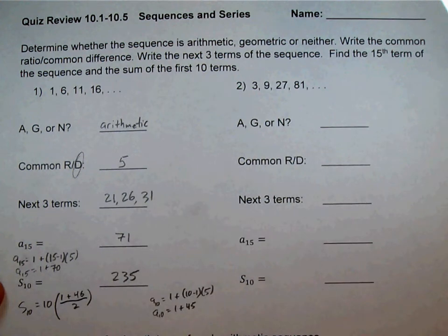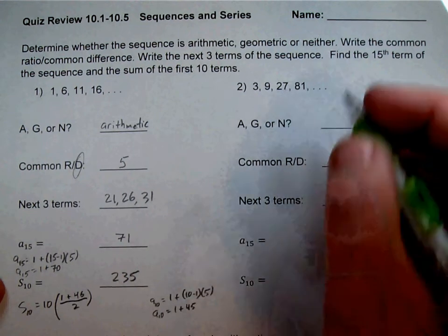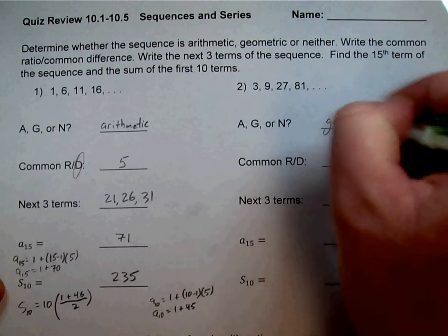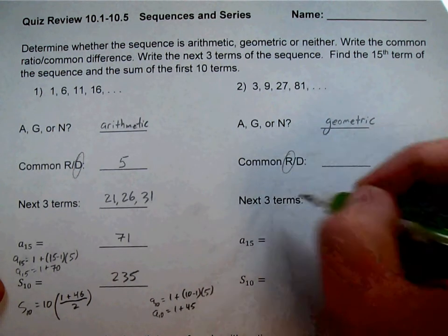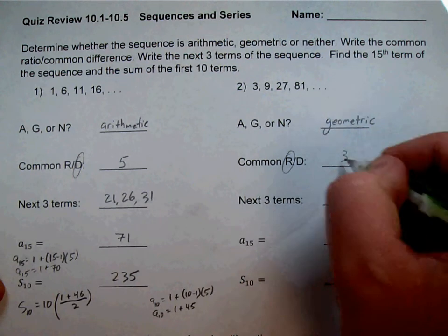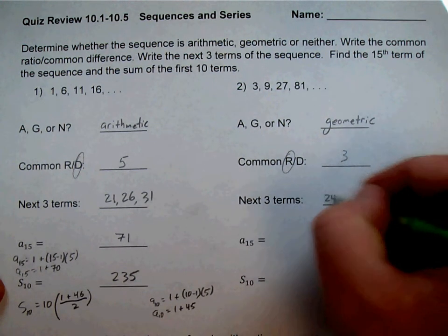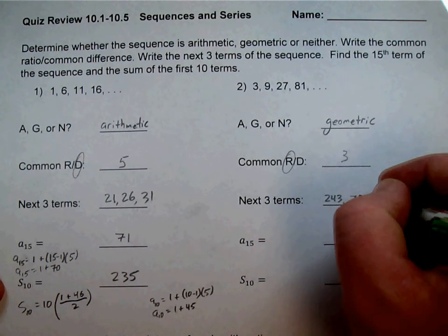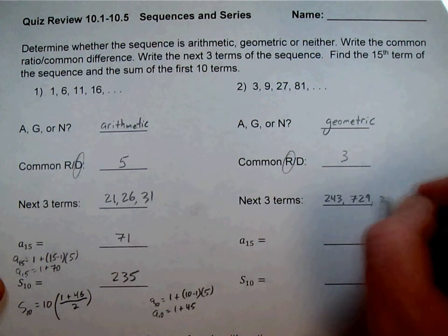Number two: it looks like we're multiplying by 3 over and over again, so that means it's geometric. We have a common ratio of 3. The next three terms: 81 times 3 is 243, then 243 times 3 gives us 729, and then multiplying that by 3 we get 2,187.